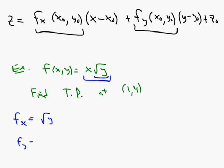For f sub y, now y is the variable. We can think of the function as x times y to the one-half, where x acts like a coefficient. So the partial derivative is x times one-half times y to the negative one-half, which we can write more nicely as x over 2 rad y.